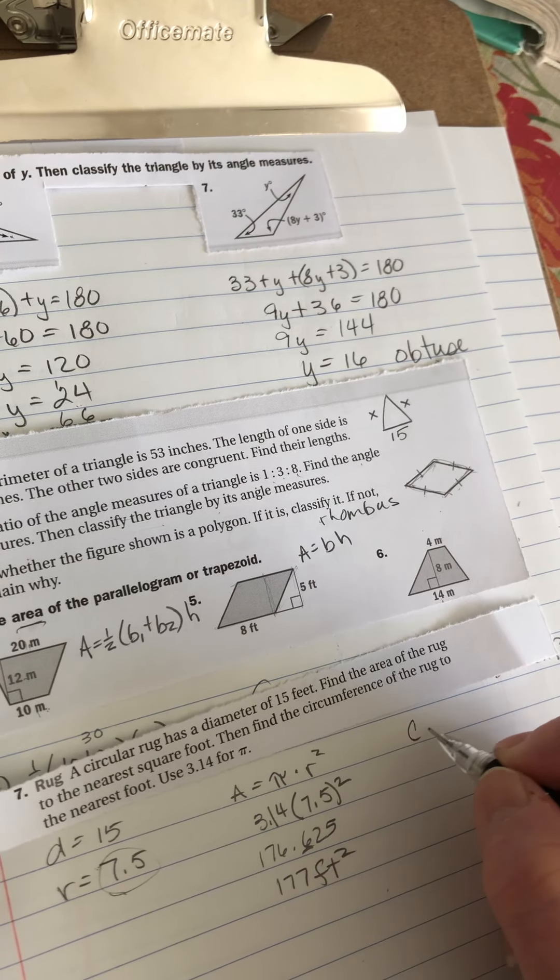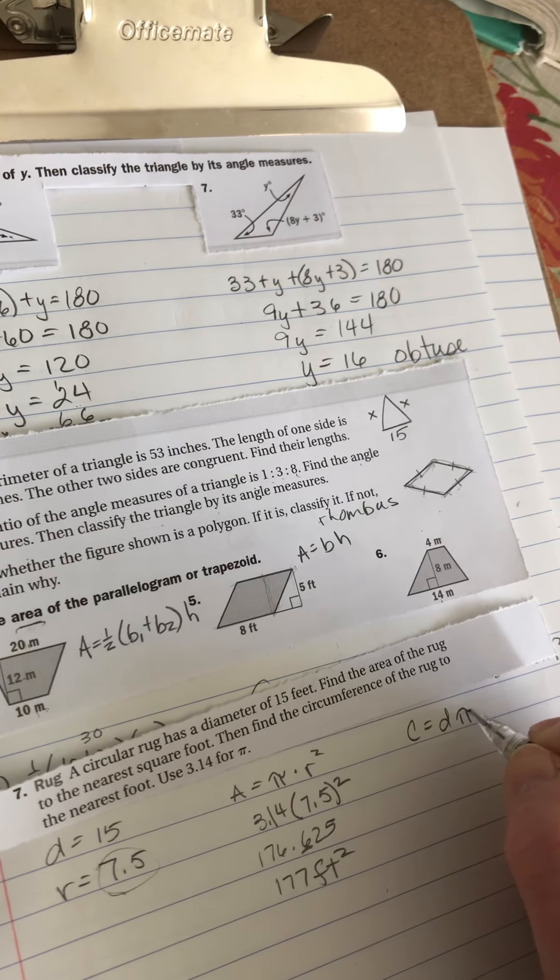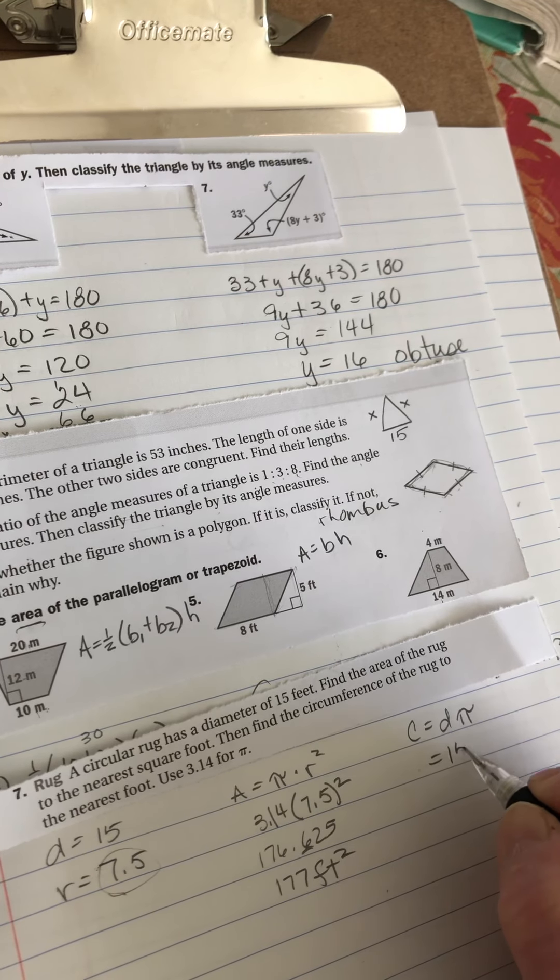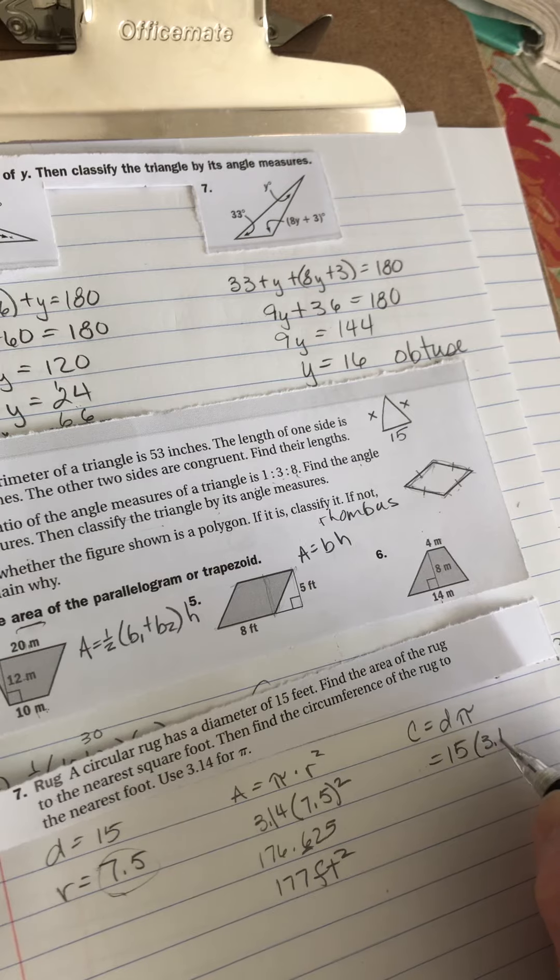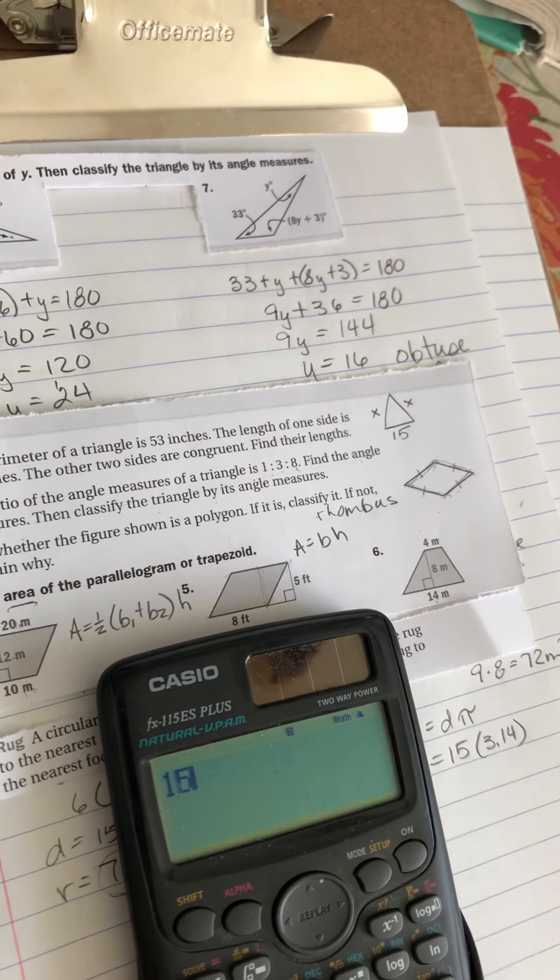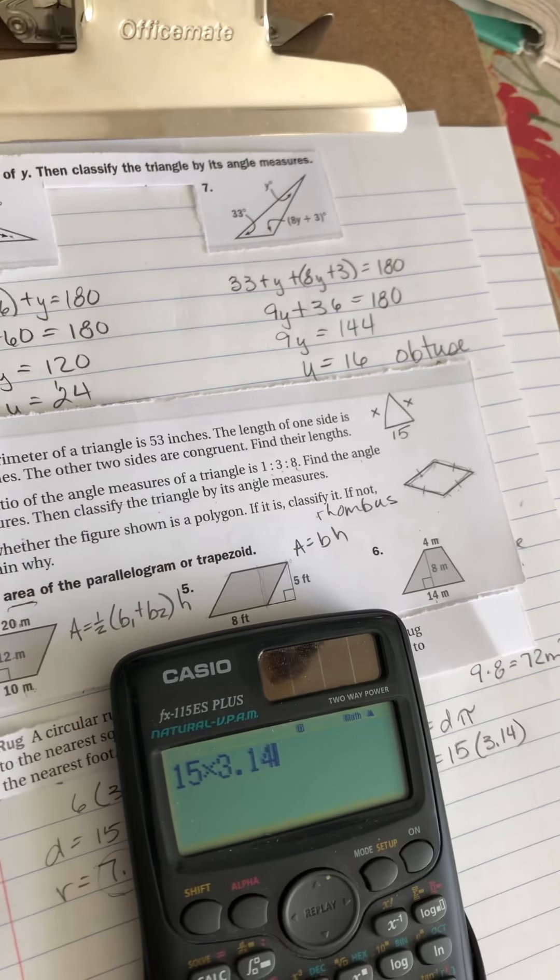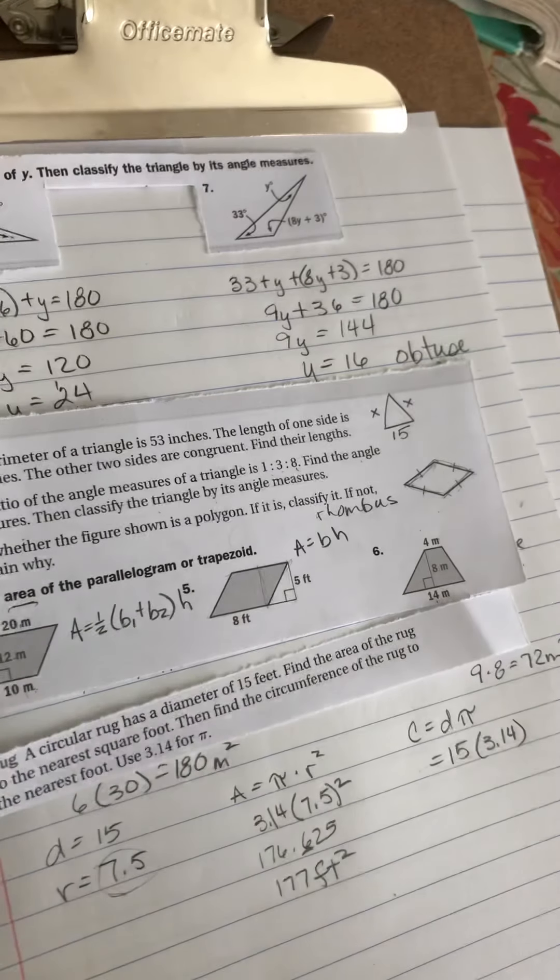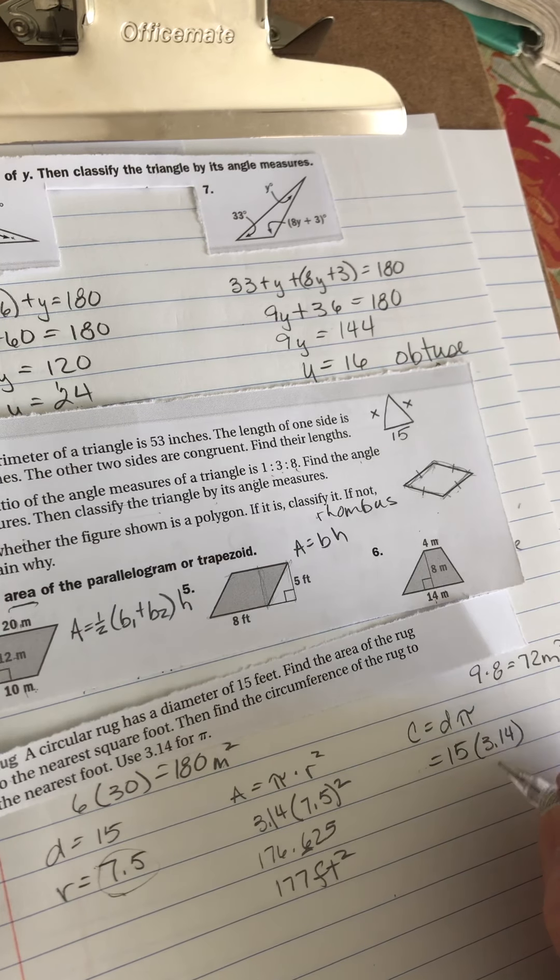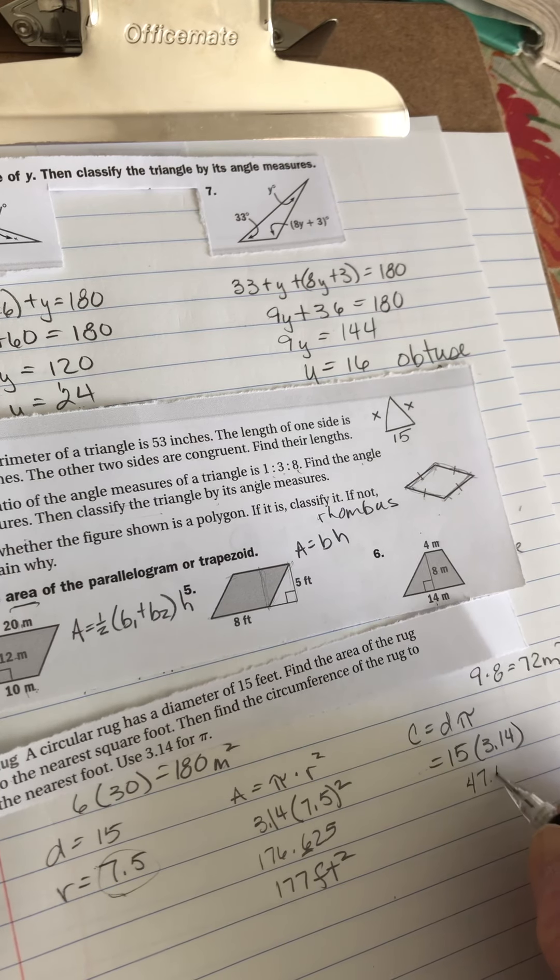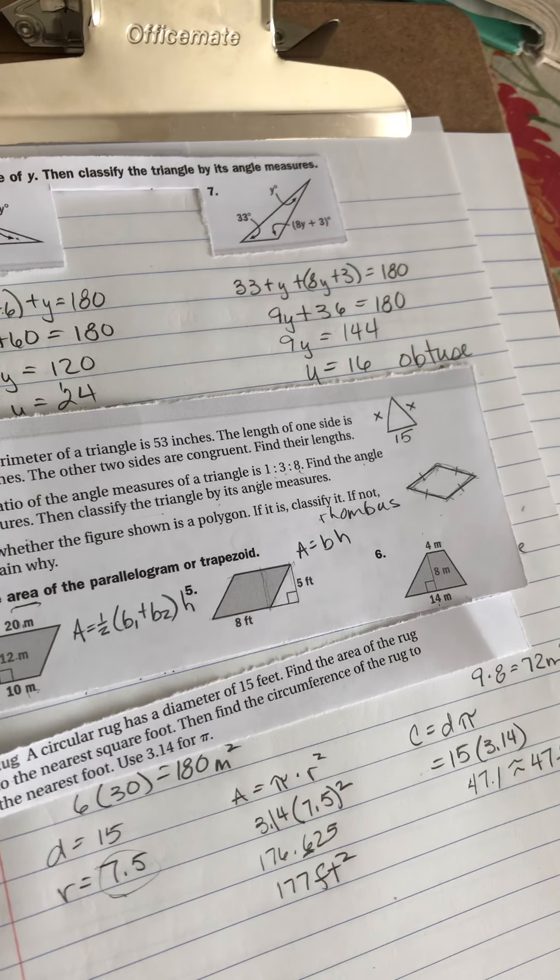The circumference is just the diameter times pi. So I can use my 15. 15 times 3.14. I could do 7.5 times 2, but I don't need to. 15 times 3.14 equals 47.1. And since we're rounding again to the nearest, so it's about 47 feet.